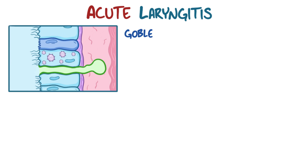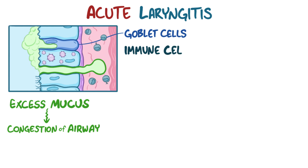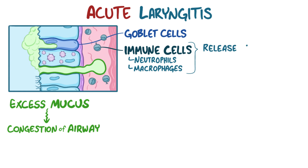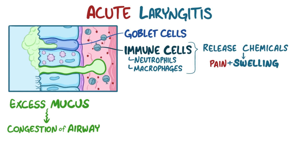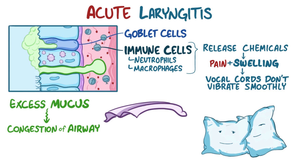In acute laryngitis, the goblet cells over-secrete mucus, and this leads to congestion of the airway. Immune cells like neutrophils and macrophages release chemicals that cause pain and swelling. Swelling of the vocal cords changes the way they move — imagine two thin sheets flapping in the wind turning into two large pillows that barely move. As a result, the vocal cords don't move and vibrate smoothly, which causes dysphonia or hoarse voice.